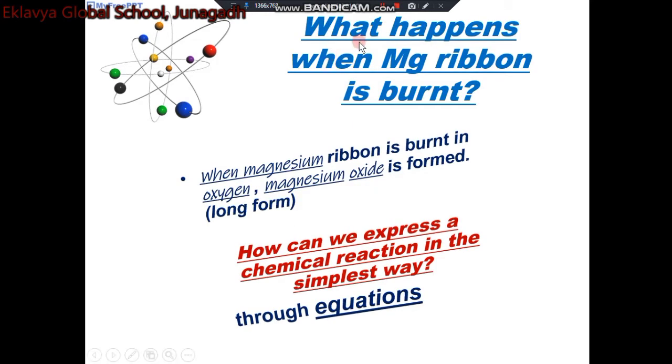What happens when magnesium ribbon is burnt? When it is burnt in oxygen, magnesium oxide is formed. But it is a long form to represent. How can we express a chemical reaction in the simplest way? It is through equations.